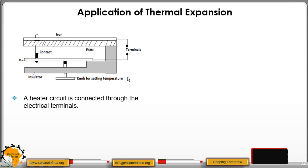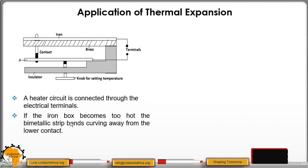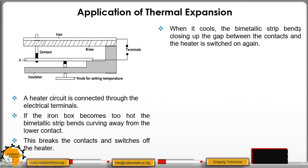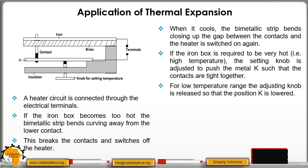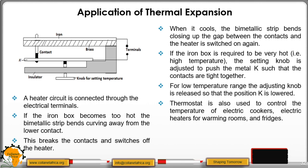How does it work? As you connect this to the heater through the terminals, the iron box becomes too hot. The bimetallic strip will bend, curving away from the contact, and that will break the circuit, so that way you are able to break and switch off the heater. When the temperatures are low or when it cools, the bimetallic strip bends closing the gap between the contacts and the heater is switched on. If the iron box is required to be very hot at higher temperatures, the setting knob is adjusted to push the metal K such that the contact is tight. But when you want to use a low temperature, then you adjust the knob by releasing so that the position K is lowered. The thermostat is also used to control the temperatures of electric cookers, electric heaters for warming rooms, and fridges.